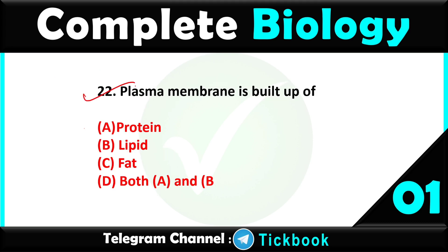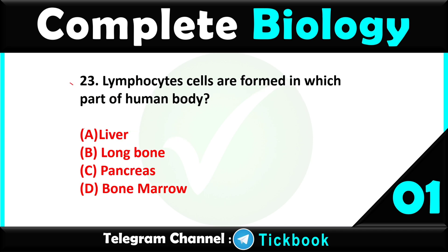Question number twenty-two: plasma membrane is built up of — option number D, both A and B: protein and lipid. Question twenty-three: lymphocyte cells are formed in which part of the human body — option number D, bone marrow, is the right answer.